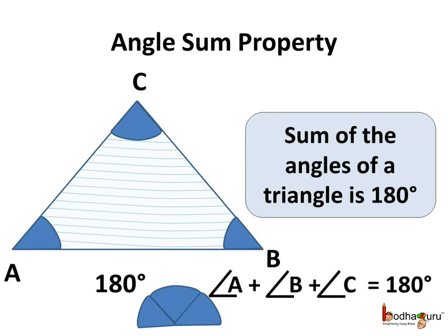Now we already know about two properties of a triangle. First, the sum of the three angles of a triangle is 180 degrees. Here in triangle ABC, if we add all the angles — that is angle A plus angle B plus angle C — their sum is equal to 180 degrees. This is also known as the angle sum property of triangles.